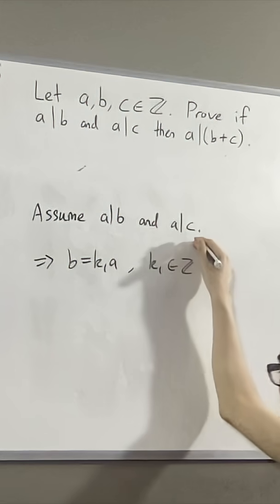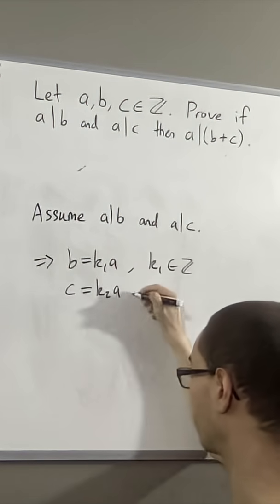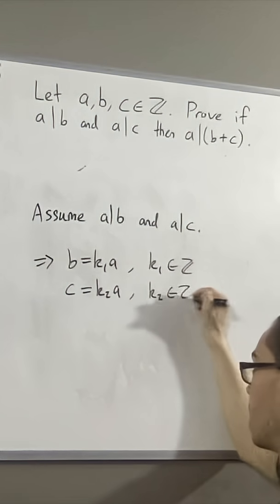Since a divides c, this means that c is equal to k2 times a for some integer k2.